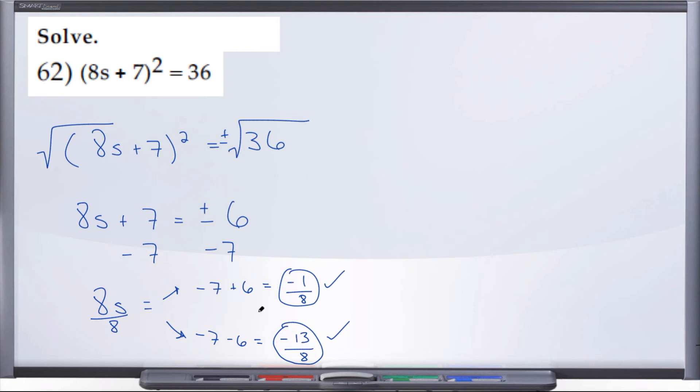We have two answers because we created our own square root, plus and minus, and by doing so, that creates two answers, a positive and negative of this 6. So when we subtract 7 from both sides,